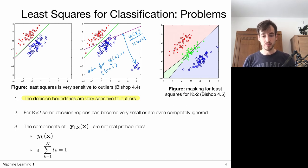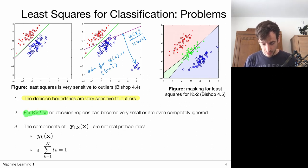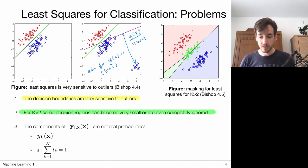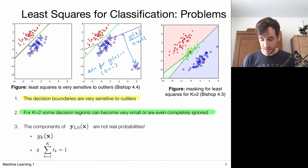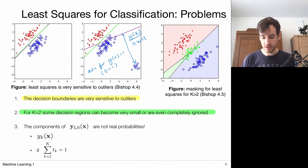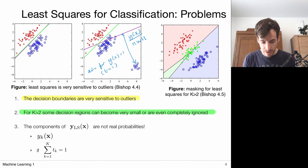There's another issue when considering more than K classes: some regions become very small or can even be completely ignored. Visualized in the figure on the right, with three classes where one is between the other two, the middle class often gets dominated by the neighboring two classes and almost disappears. This effect is called masking, and it happens quite often with regression used for multi-class classification.